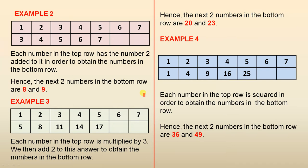Example 3: we have the five numbers here generated. Each number in the top row is multiplied by 3, then we add 2 to this answer to obtain the numbers in the bottom row. So 3 1s are 3, add 2 to give us 5. 3 2s are 6, add 2 to give you 8. 3 3s are 9, add 2 to give you 11 and so on. 3 6s are 18, add 2 to give you 20. 3 7s are 21, add 2 to give you 23. Hence, the next two numbers in the bottom row are 20 and 23.